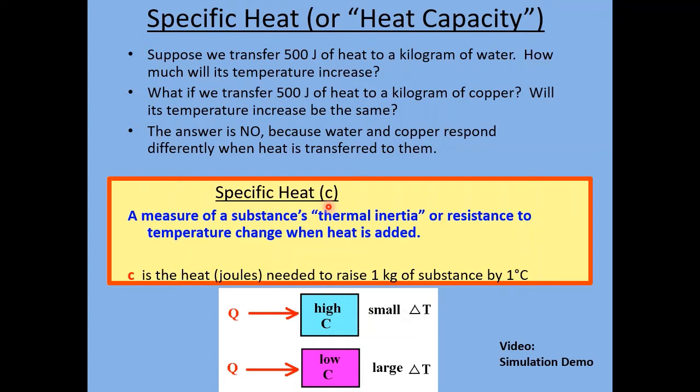Even though it's the same amount of material — one kilogram — water and copper behave very differently in the presence of heat being added. This leads us to the concept of specific heat, given the symbol C (lowercase c). One way to think of it is as a measure of a substance's thermal inertia — its resistance to temperature change when heat is added. More specifically, C is the heat in joules needed to raise one kilogram of a substance by one degree Celsius.